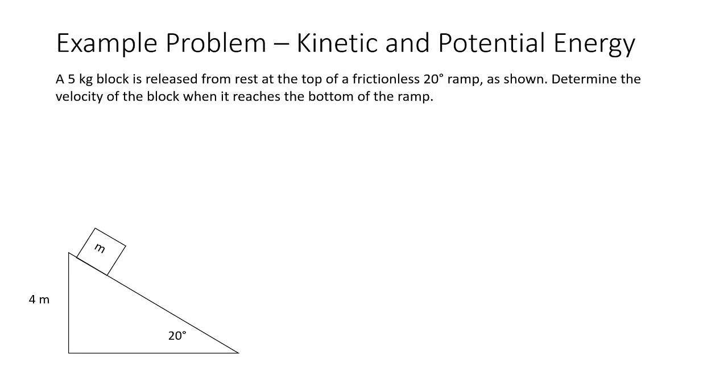Okay, so here's the idea in this problem. The idea is that we start with a certain amount of potential energy in the system and because our ramp is frictionless all of that energy has to be conserved in the form of kinetic energy or potential energy.